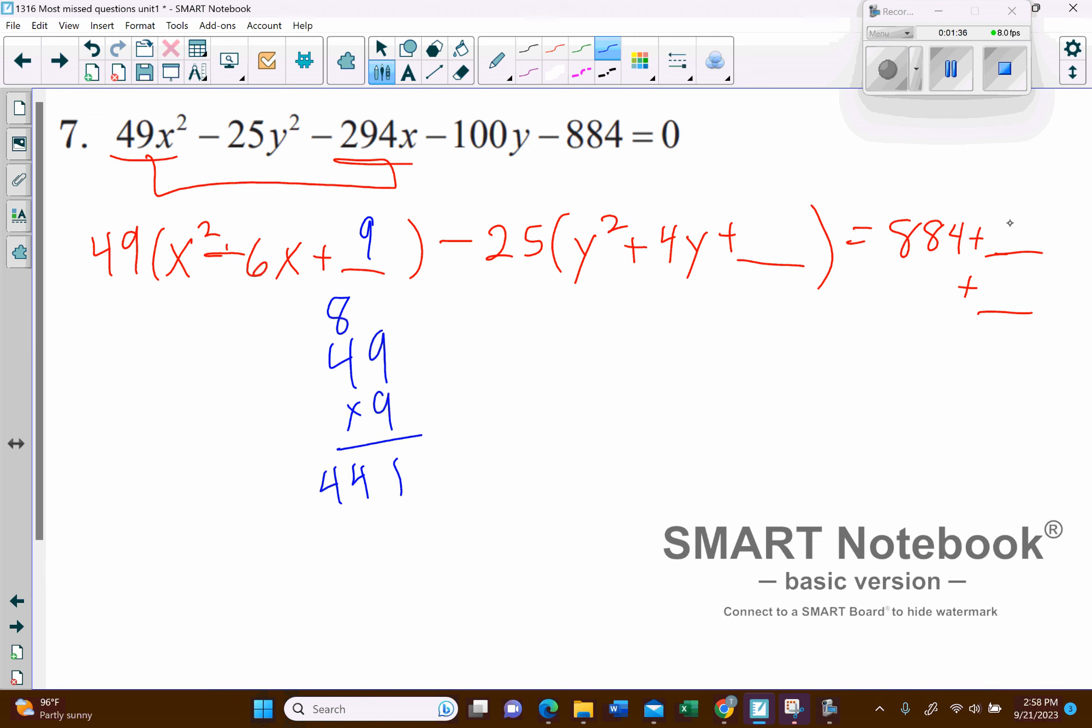Okay, so I'm going to have to add 441 right here, and then over here, half of 4 is 2, and then squared is 4, and then 4 times, now you've got to be careful, because that's a minus 25, so that's really negative 100. So I'm actually going to have to subtract 100 from the other side to keep balanced.